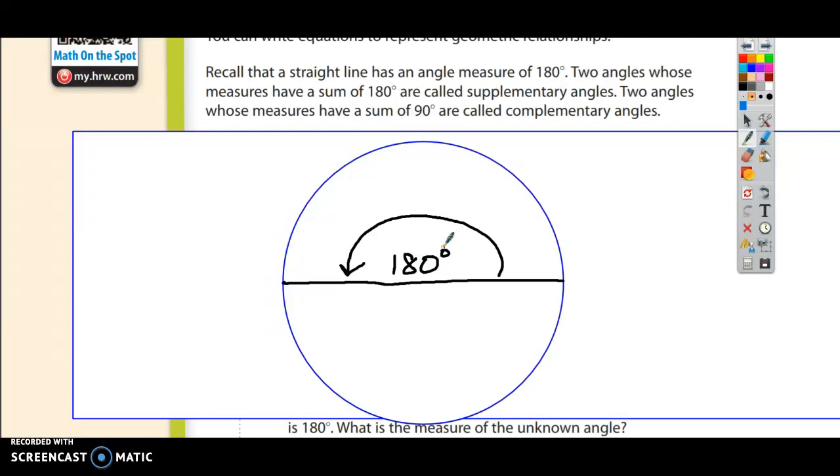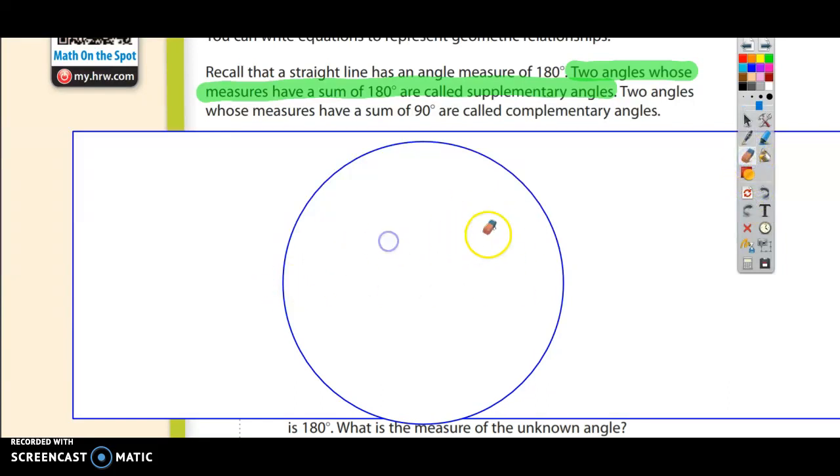So what we're saying here is that if two angles whose measures have a sum of 180 degrees are called supplementary. Let's pretend that I have a straight line here, and then I have a line going like this. This angle plus this angle would make a straight line. You can see that if I just didn't stop right there, if I went through, it would be 180.